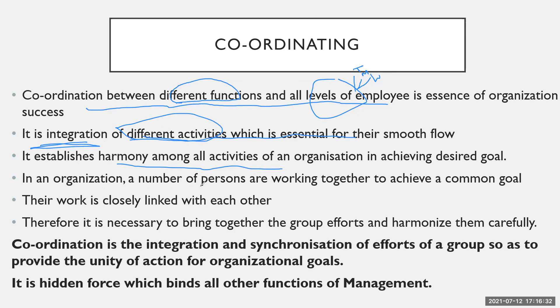In an organization, a number of persons are working together to achieve a common goal. They need coordination because they have to achieve their common goal — the goal of the organization — to earn profit and to work hard for their organization. Their work is closely linked with each other.